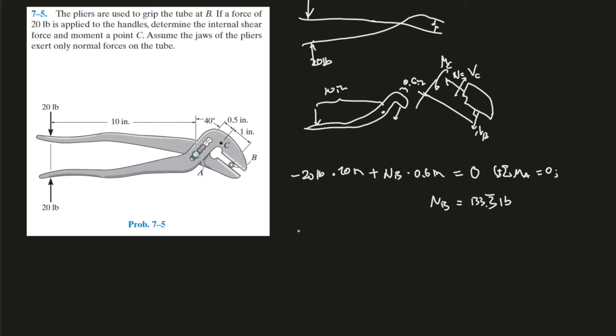Sum of the forces in the X direction equals to zero, therefore, NC equals to zero, because there's no other force counteract that normal force. Sum of the forces in the Y direction going upward, let's say is positive, equals to zero, then NB must be equal to VC. So VC is also 133.3 pounds.